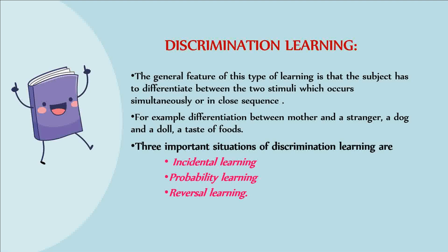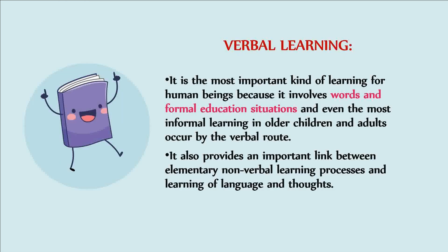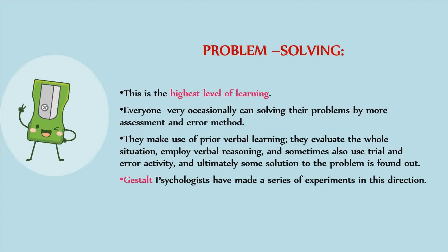Three important situations of Discrimination Learning are Incidental Learning, Probability Learning, and Reversal Learning. Verbal Learning: It is the most important kind of learning for human beings because it involves words and formal education situations, and even the most informal learning in older children and adults occurs by the verbal route. It also provides an important link between elementary non-verbal learning processes and learning of language and thought. Problem Solving: This is the highest level of learning. Students solve problems through assessment and trial and error methods, making use of prior verbal learning, evaluating the whole situation, employing verbal reasoning, and ultimately finding some solution.